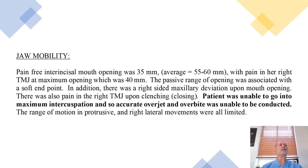Jaw mobility: Pain-free maximum mouth opening was 35 millimeters. Average for a woman is 55 to 60 millimeters. With pain, the right TMJ had a maximum opening of 40 millimeters. Passive range of opening was associated with a soft endpoint, which verifies there were no fractures. In addition, there was a right-side maximum 30-degree deviation upon mouth opening. There was also pain in the right TMJ upon clenching. The patient was unable to go into maximum intercuspation, so accurate overjet and overbite could not be conducted. Range of motion — protrusion and right and left movements — were all limited.